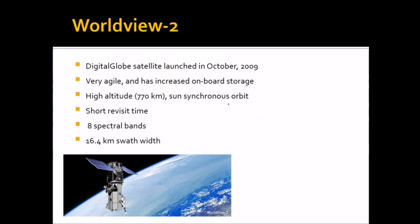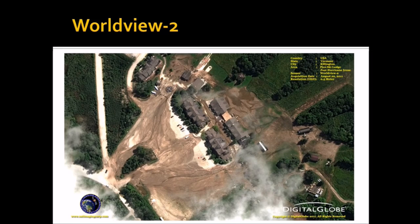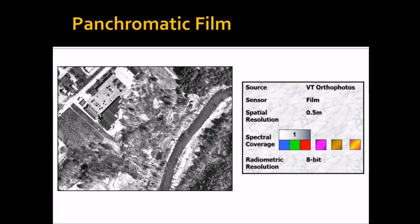WorldView-2 is also by Digital Globe. We also have WorldView-3 with 0.31-meter resolution. WorldView-2 is very agile and has increased onboard storage. It orbits around 770 kilometres above in a sun-synchronous orbit. It has 8 spectral bands and a swath of 16.4 kilometres — larger than the 11-kilometre swath provided by IKONOS. WorldView-2 provides panchromatic resolution of 0.5 metres.